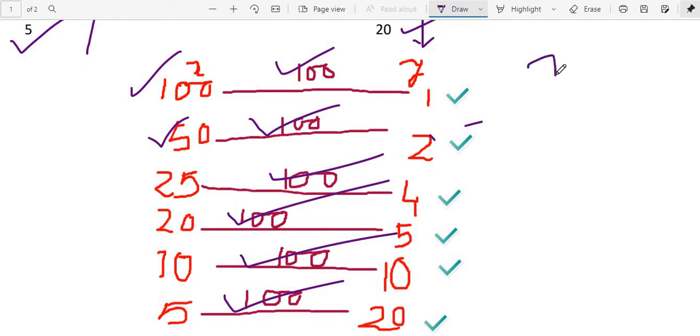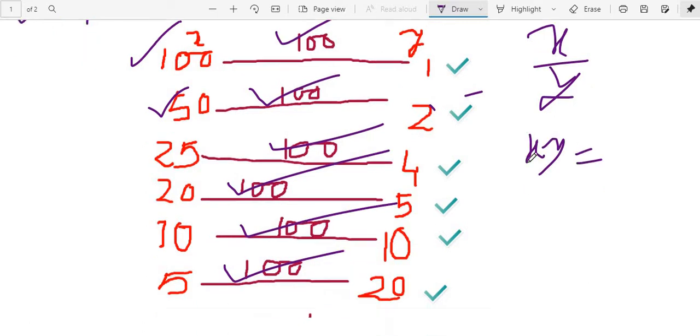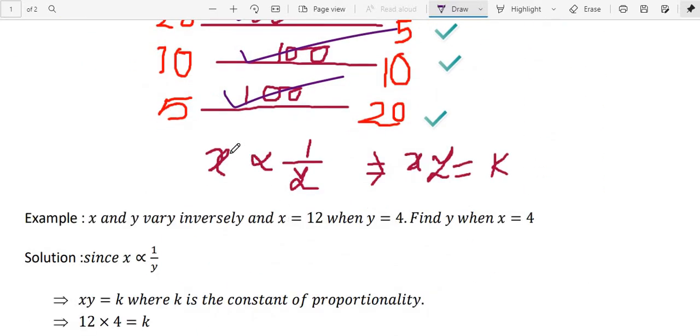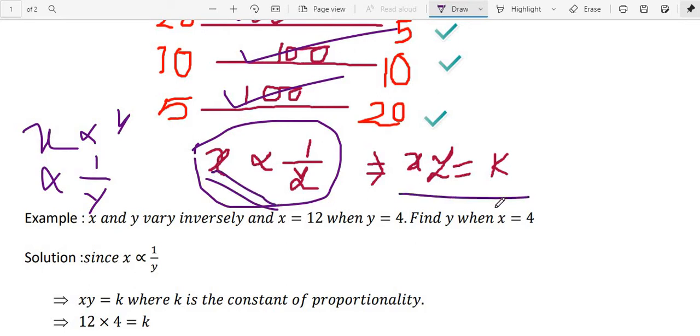In case of direct variation, X by Y was constant. So here, not X by Y, X into Y is constant. So whenever X varies inversely as Y, then we write this symbol. In case of direct variation, we write X is directly proportional to Y. And here we write X is directly proportional to 1 by Y. So if it is 1 by Y, then X and Y are in inverse variation. And in that case, as you have observed, XY equal to K.